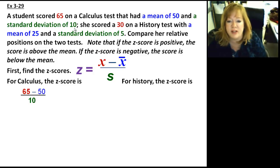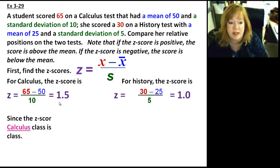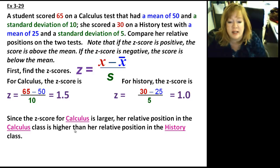And then for the history class, the z-score is going to be 30 minus the mean of 25 over the standard deviation of 5. So your z-score on your calculus class, when you do that all down, is one and a half. And the z-score for history is one. You can see that this one's higher. That means it's further from the mean, further to the right of the mean. So she's going to have a higher standing in her calculus class than in her history class. She's in the upper part of her calculus class.